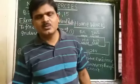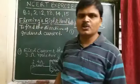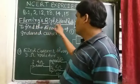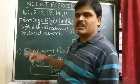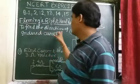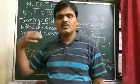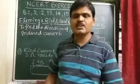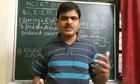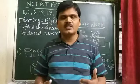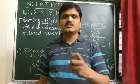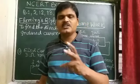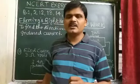Good morning students. Today I am going to explain Fleming's right hand rule and how to use it to find the direction of induced current. In the previous class I explained that induced current is produced in a coil due to the change in magnetic flux — either due to relative motion between a bar magnet and the coil, or due to a change in current in the primary coil.